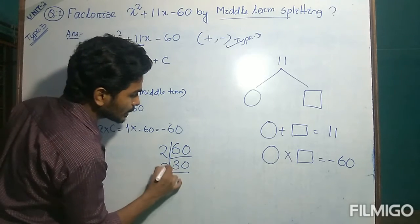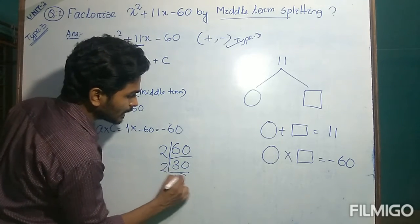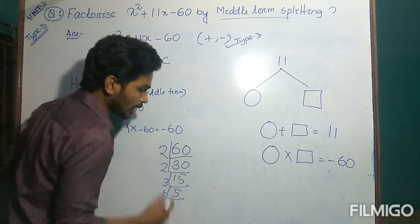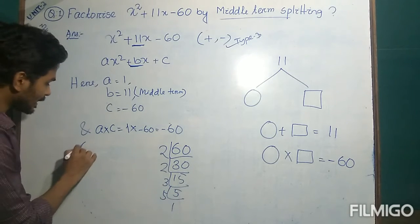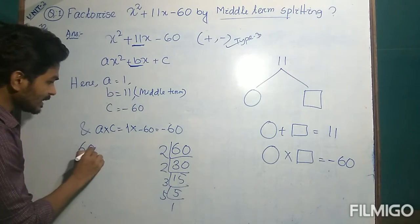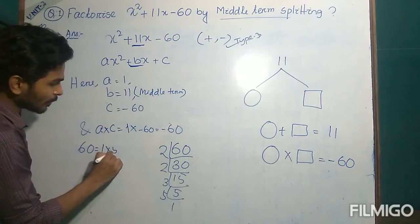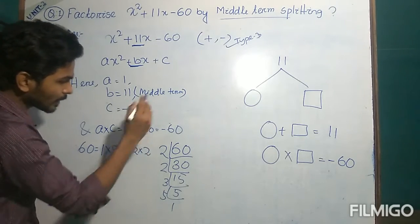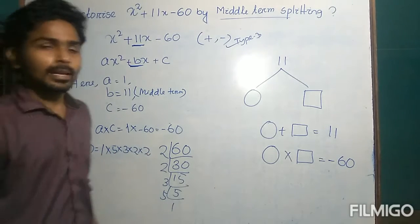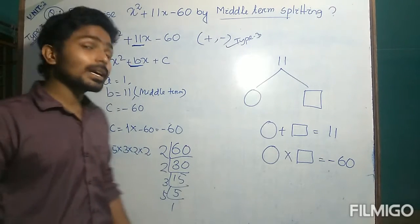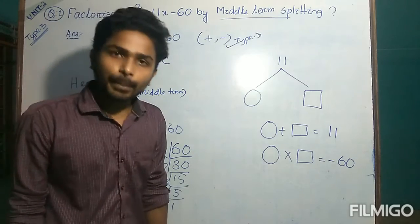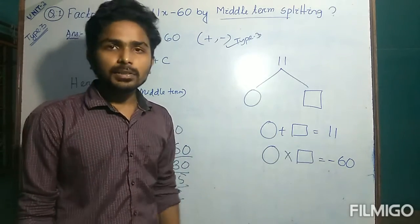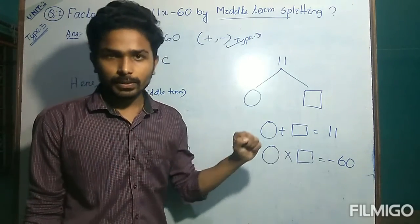Factorizing 60: 2, 30; 2, 15; 3, 5; 5, 1. Hence we get 60 is equal to 1 into 5 into 3 into 2 into 2. Among these five numbers, we have to choose a pair so that they will give 11 as addition and minus 60 as multiplication.